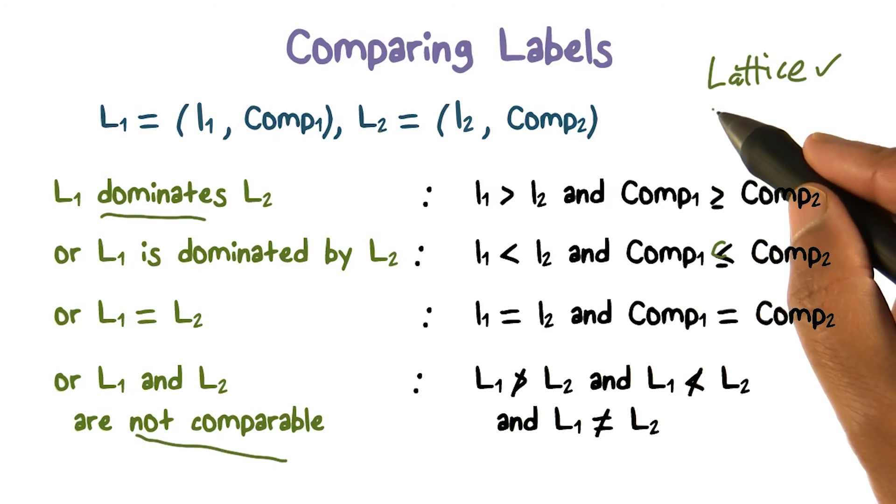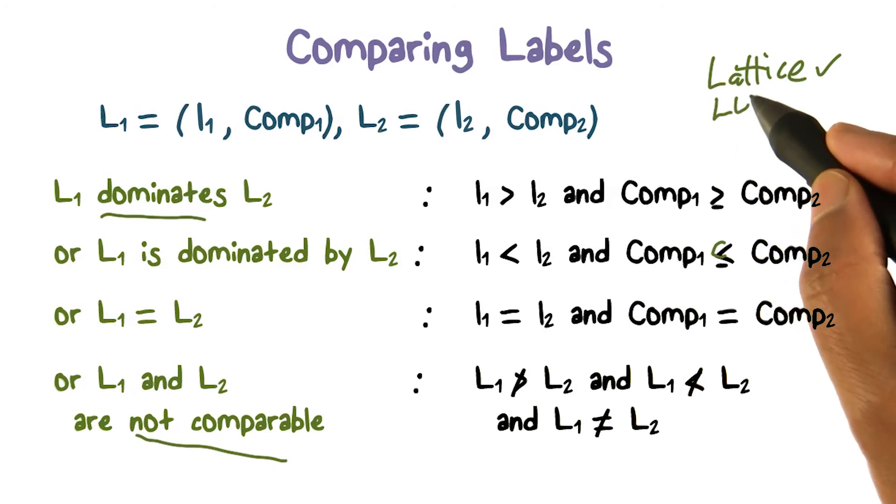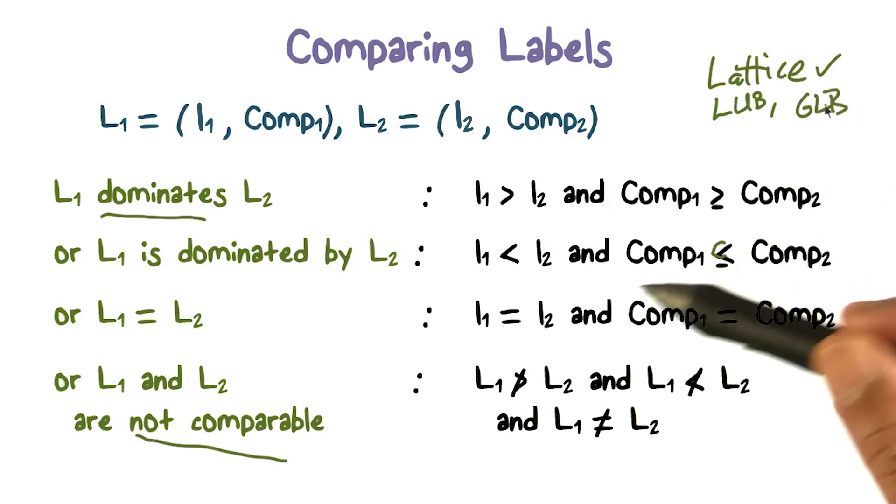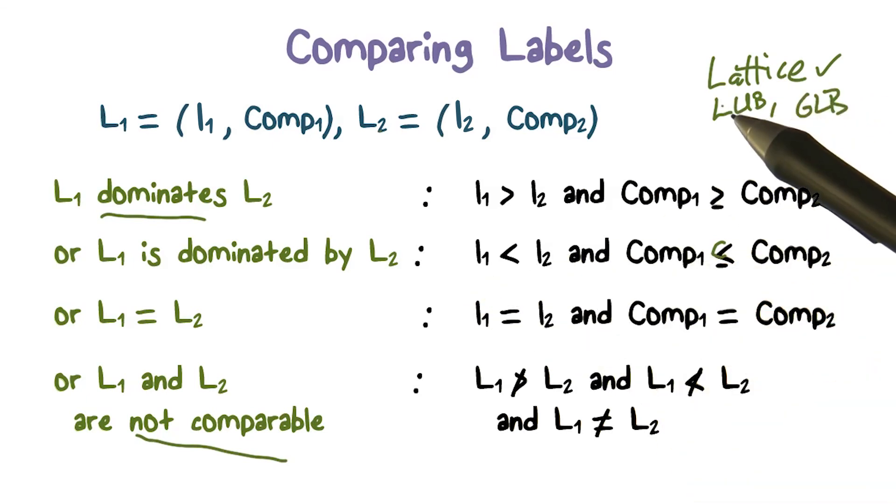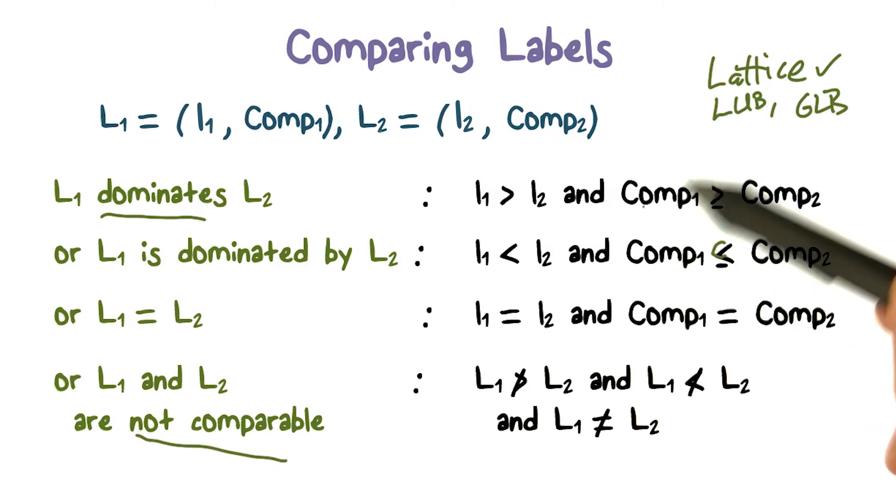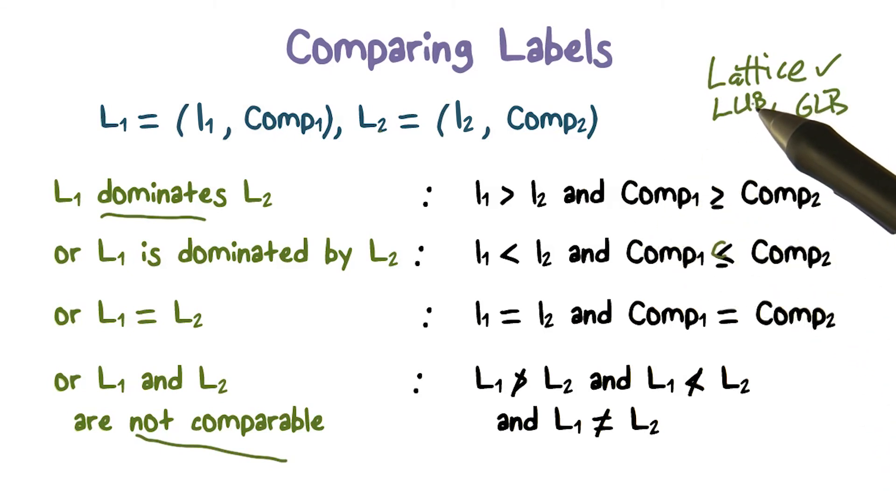And when you have a lattice, you have the elements that are the least upper bound, and the greatest lower bound, and things like that. So you can always find labels that would dominate any set of labels that you have. So that would be finding an upper bound, and you can find the smallest such upper bound. So that's lub and things like that.